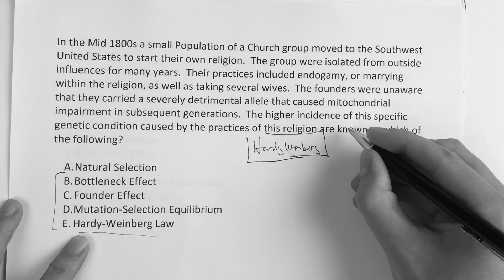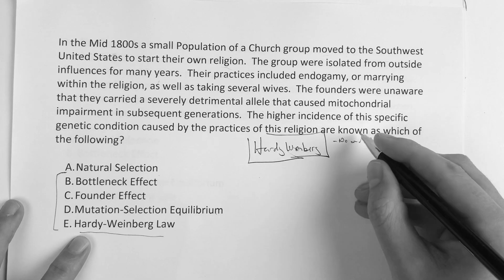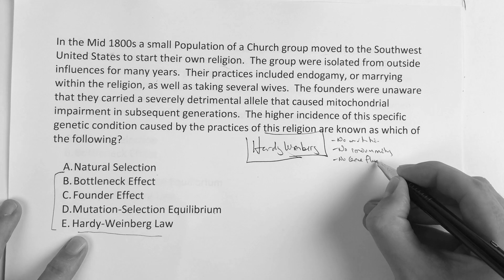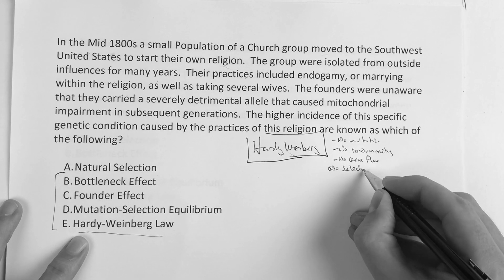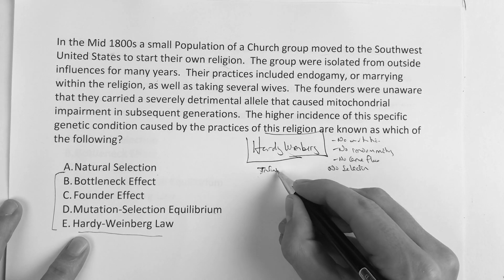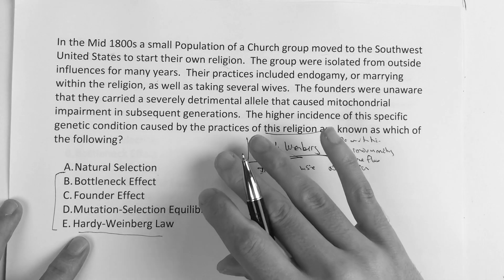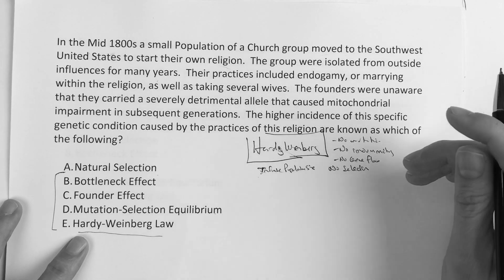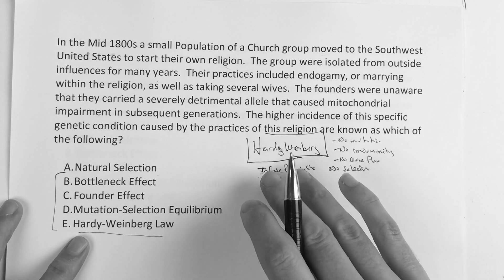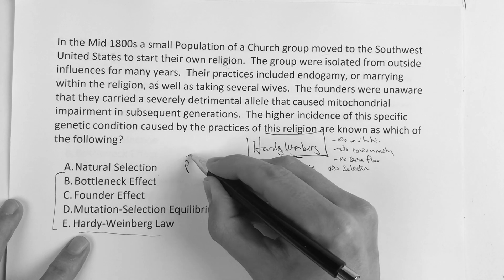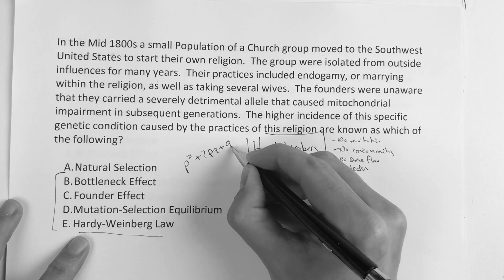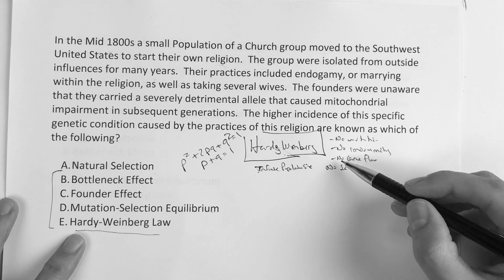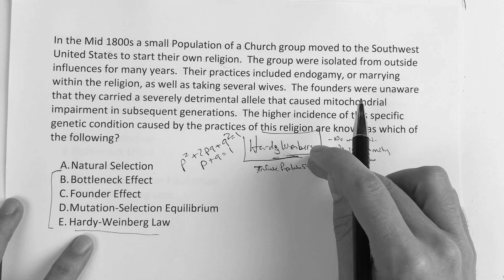Hardy-Weinberg gives you a good idea of where the other terms come from, because it makes five basic assumptions: no mutation, no random mating, no gene flow, no selection, and an infinite population size. Hardy-Weinberg works well in a science lab because it assumes perfection — none of these variations occur — but in reality, a lot of this stuff does occur.